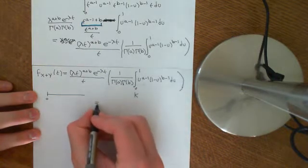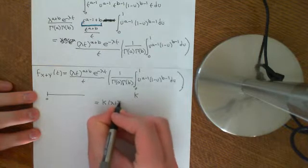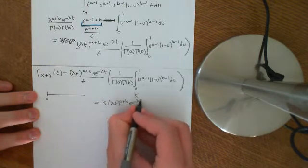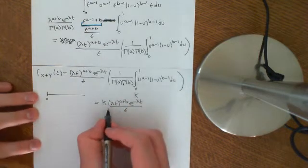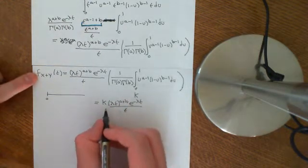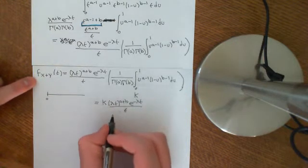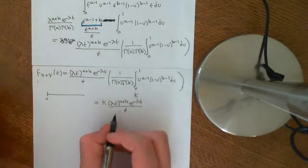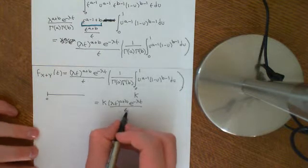So what we get is that the PDF is just some constant times (λt) to the power of a+b, times e to the negative λt divided by t. This is guaranteed to be a PDF because the convolution is going to be a PDF, and the way we constructed it, it was guaranteed to integrate to 1. So this constant is going to be whatever you need to make this integrate to 1.